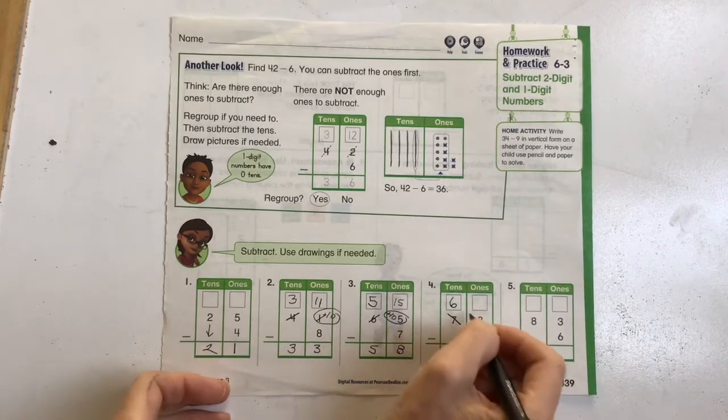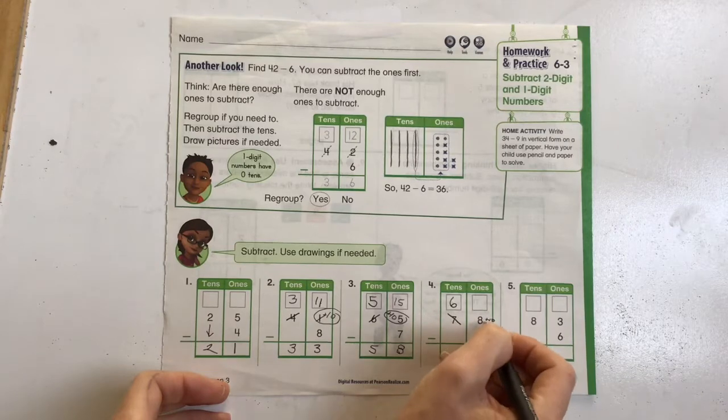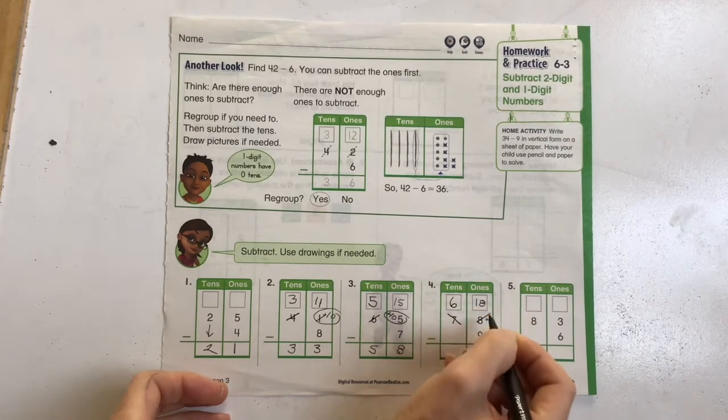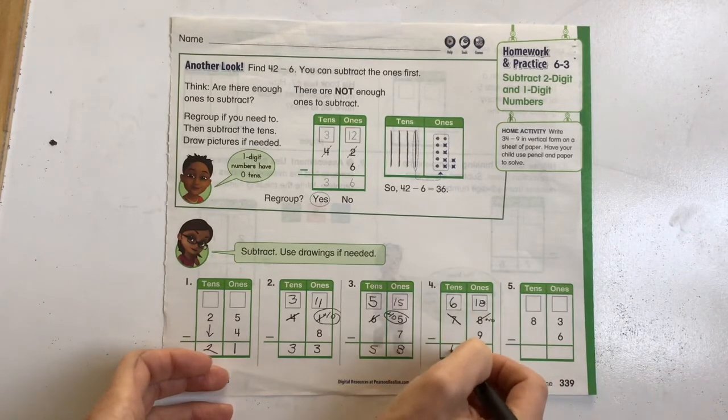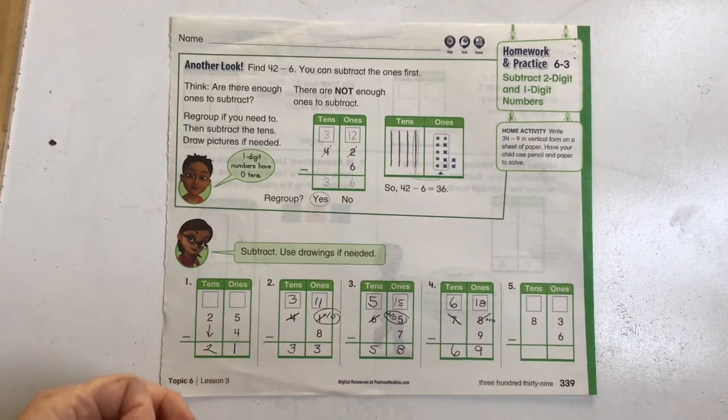I've got 8. I take that group of 10, I need to add it on over here. 8 plus 10 is 18. 18 minus 9 is 9, and we're dropping that 6 straight down for a difference of 69.